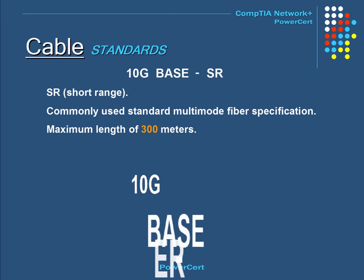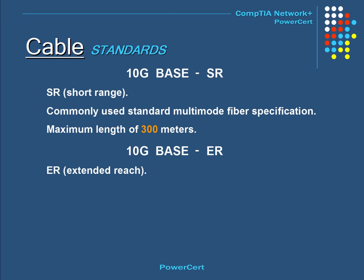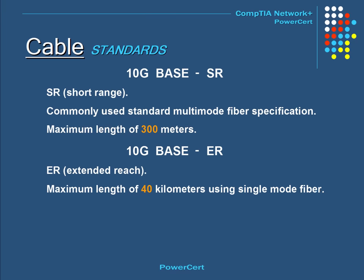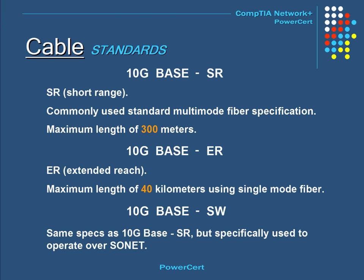10GBASE-ER, or Extended Reach, has a longer range of 40 kilometers using single-mode fiber optics. 10GBASE-SW has the same specification as 10GBASE-SR, but is specifically used to operate over SONET, which is Synchronous Optical Networks.